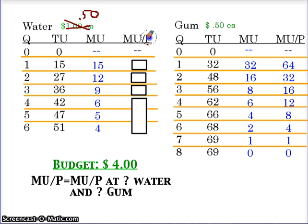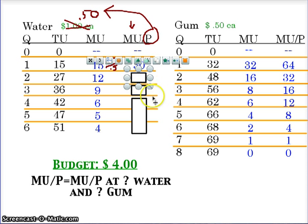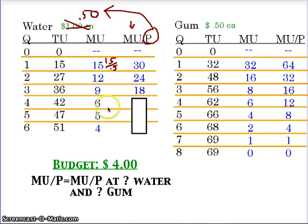What changed is the price tag. So I need to reassess this equation. 15 marginal utility over 0.5, and the marginal utility of gum, which has not changed, over the price tag, which we have changed — that's going to yield a new set of numbers. Pause the video and go ahead and calculate mu over price of water using the new price tag. We see that 15 over 0.5 is 30, 12 over 0.5 is 24, 9 over 50 cents is 18, and so on — we now have a new set of numbers.